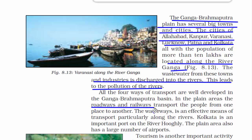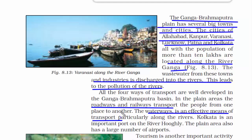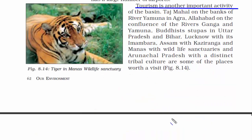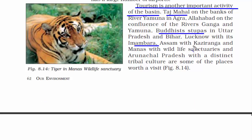In terms of transportation, railways, roadways, and waterways are very effective means. These plain areas also have a large number of airports. These two river basins have also flourished the tourism industry — Taj Mahal, Buddhist stupas, Imambara, wildlife sanctuaries like Kaziranga and Manas, and the distinct tribal culture of the northeastern part of India attract a lot of tourists from all over the world.